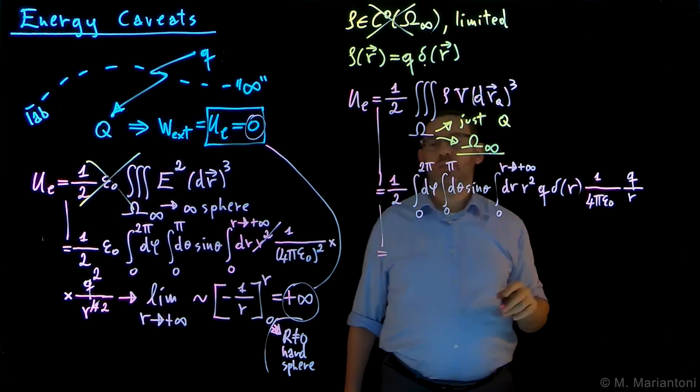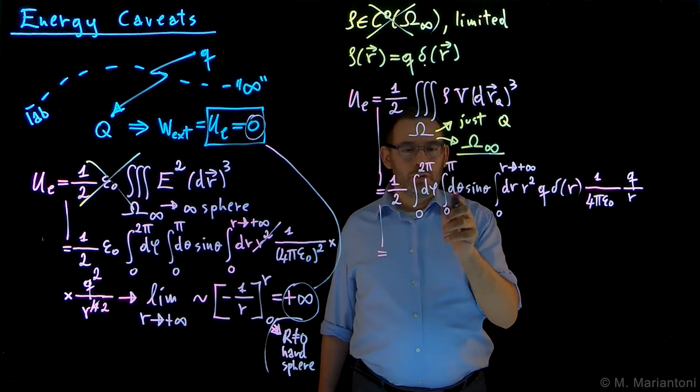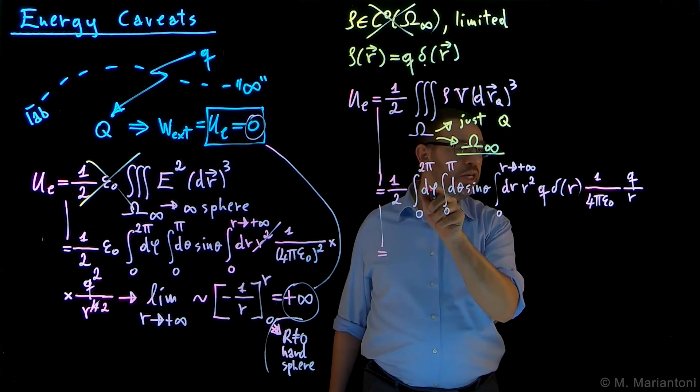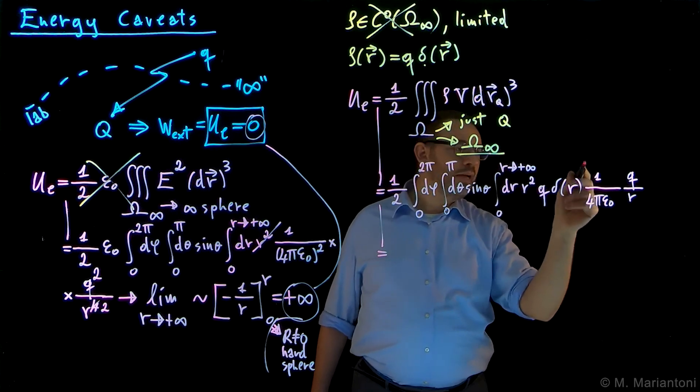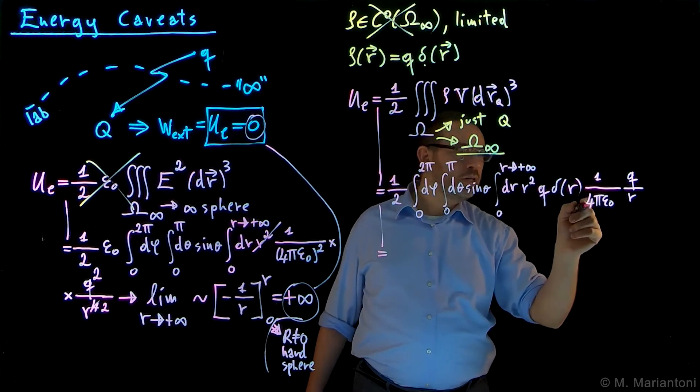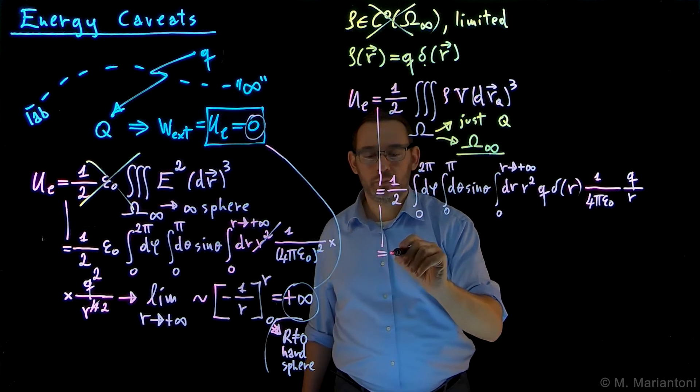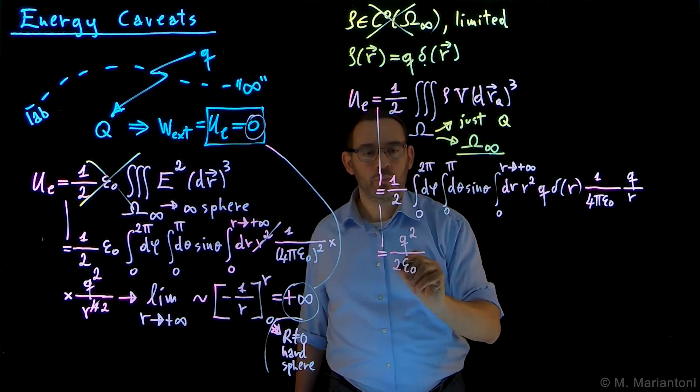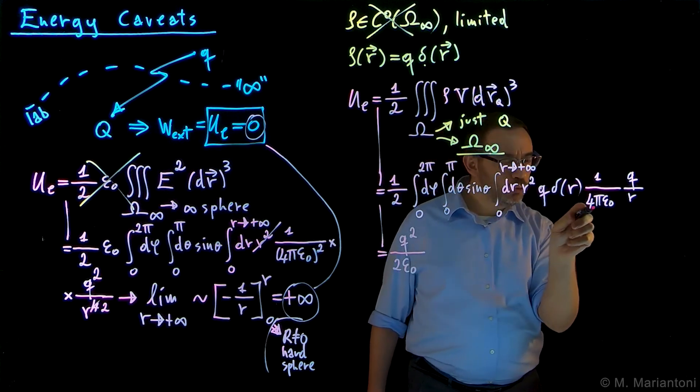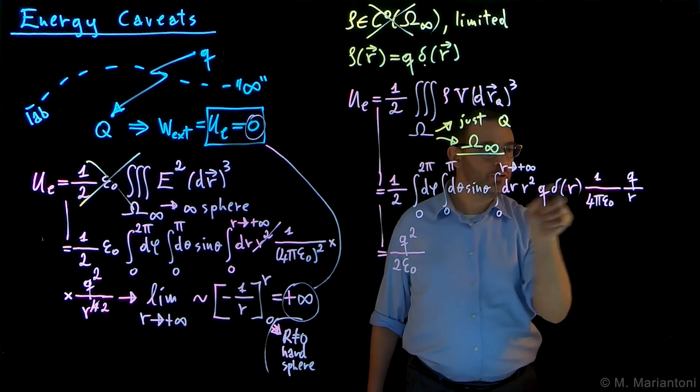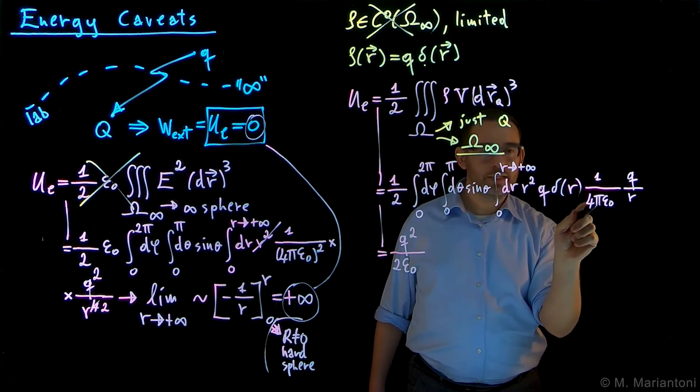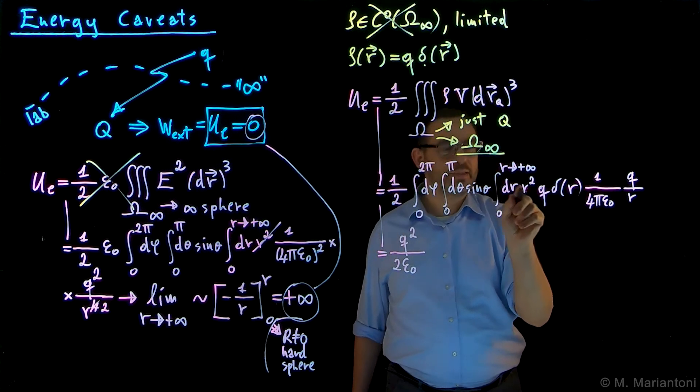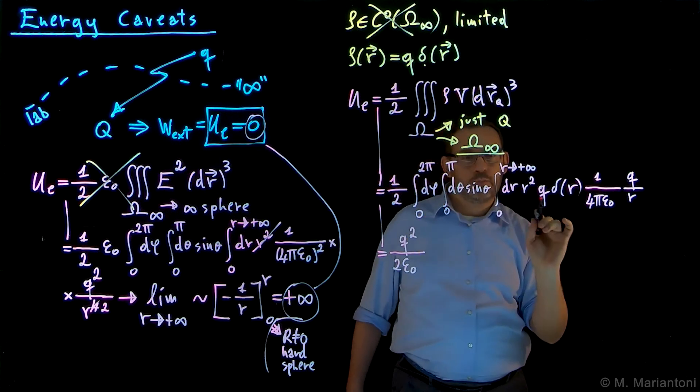So this integral becomes a bunch of constants. 2 times 2π, 2 divided by 2 is 1, so it becomes 2π from here. 2π divided by 4π is 1 over 2, so we get Q over 2 epsilon naught—Q squared over 2 epsilon naught. So Q we took care of, R we still need to integrate, but there is this R squared here. Epsilon naught we took care of, there is this delta, and all the rest we took care of.